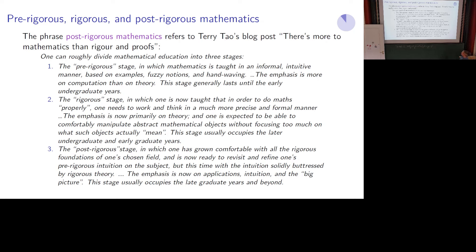Then the rigorous stage, in which one is now taught that in order to do maths properly one needs to work and think in a much more precise and formal manner. The emphasis is now primarily on theory, and one is expected to be able to comfortably manipulate abstract mathematical objects without focusing too much on what such objects actually mean. This stage usually occupies the later undergraduate and early graduate years.